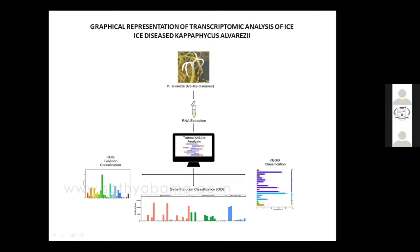In the transcriptome studies, we can see functional analysis of particular genes involved in biological processes, cellular processes, and molecular processes. We have GO classification, KEGG pathway studies, and KOG functional classification studies. These classification graphs show how biological, chemical, and cellular processes are affected in ice-ice disease in Kappaphycus alvarezii. This transcriptome analysis can be done for any gene expression analysis — it reveals which genes are down-regulated and up-regulated compared to the normal versus diseased state.